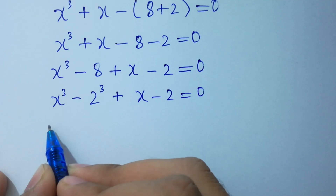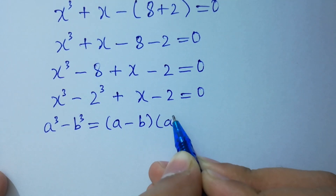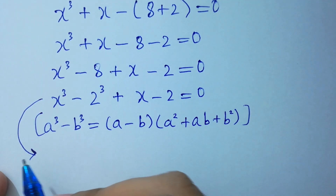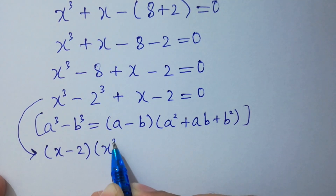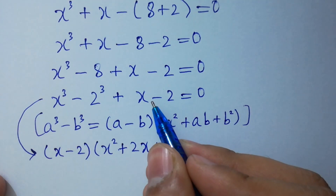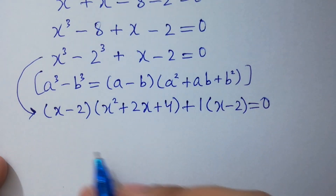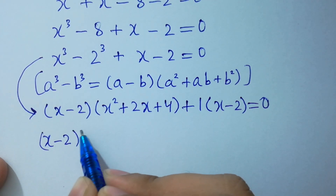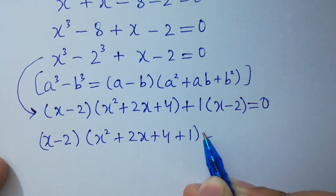As we know, a cubed minus b cubed equals (a minus b)(a squared plus ab plus b squared). Applying this, x cubed minus 2 cubed becomes (x minus 2)(x squared plus 2x plus 4). So the equation becomes (x minus 2)(x squared plus 2x plus 4) plus 1 times (x minus 2) equals 0. Since x minus 2 is a common factor, we get x squared plus 2x plus 4 plus 1 equals 0.